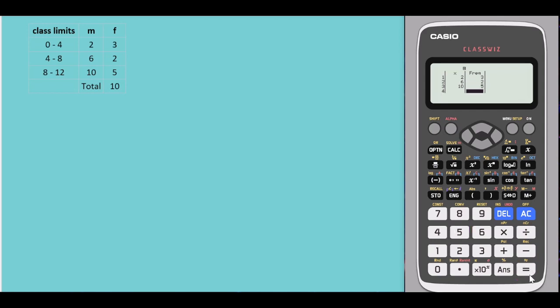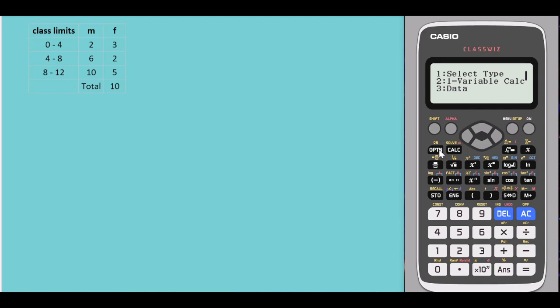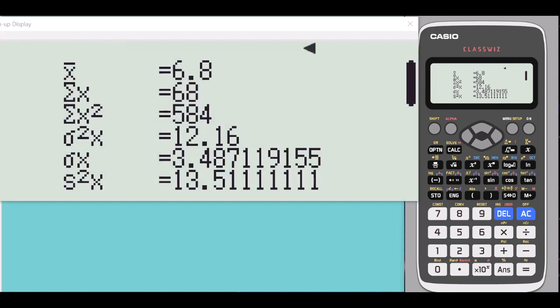Once done, press AC, then select Options and choose two for the values of the sample mean, sample variance and sample standard deviation. The values are now displayed.